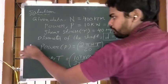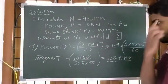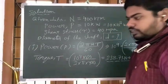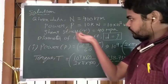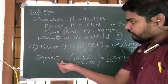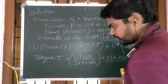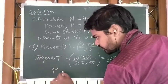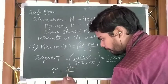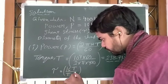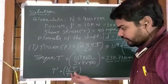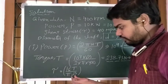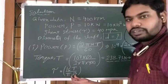This is the first formula — power — to remember when solving shaft problems. Now we have torque, and shear stress is also given. There is a relation between torque and shear stress: tau equals 16T divided by pi D cube, where D is diameter of the shaft, T is torque, and tau is shear stress. From this relation we can calculate the diameter of the shaft.